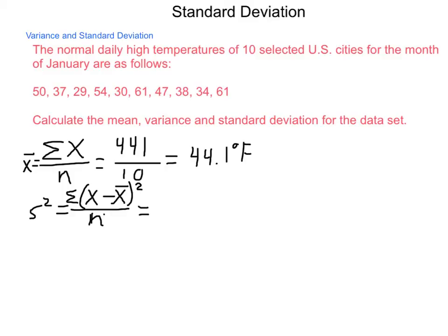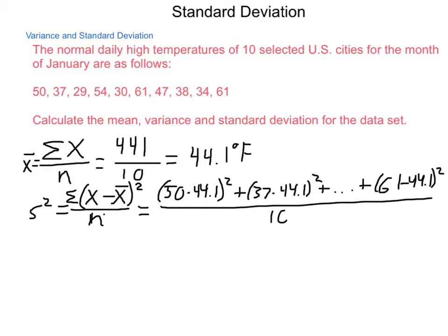So, what this means is we're going to take 50 minus our 44.1 and square it, add to that 37 minus 44.1 squared, and keep adding all the way down to 61 minus the 44.1 squared, and divide all those numbers by 10.